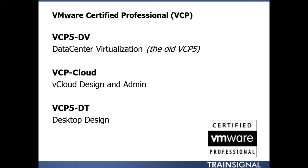There are now three different types of VCP: the VCP-DV on data center virtualization covering VMware vSphere, ESXi, and vCenter; the VCP on cloud covering vCloud design and administration; and the VCP on desktop virtualization covering desktop design. Importantly, to achieve a VCP Cloud or VCP-DT, you must first achieve the VCP-DV. That data center virtualization VCP is the bottleneck for all certification paths — you must have it before getting other VCPs, VCAPs, and ultimately the VCDX.